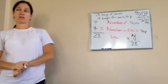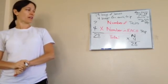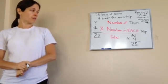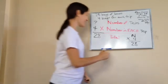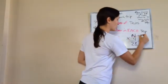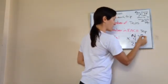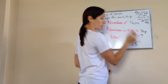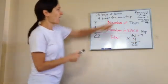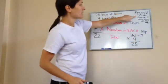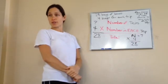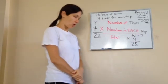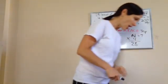Seven. Very good, excellent job. N equals seven, because seven times four equals 28. So how many trips did it take Monica to carry away all the bags? Seven trips to carry them all the way. That's lesson 21. Good job.